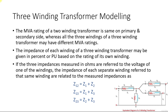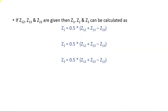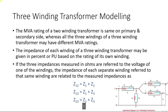Usually you will be given Z1, Z2, and Z3 in per unit on their own MVA ratings. The impedances can be calculated as follows: Z12, from the HV side to LV side, equals Z1 plus Z2. Similarly, Z13 equals Z1 plus Z3, and Z23 equals Z2 plus Z3. So by adding the respective winding impedances you obtain the impedance between any two windings.